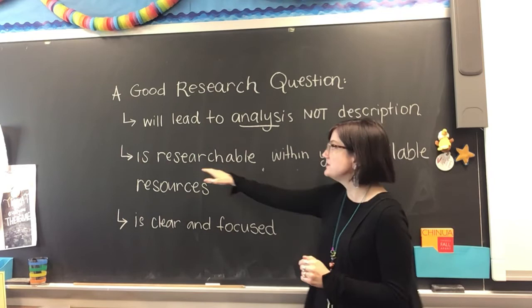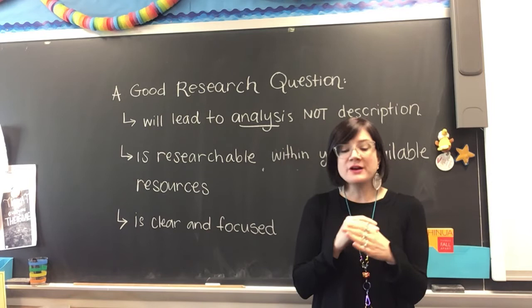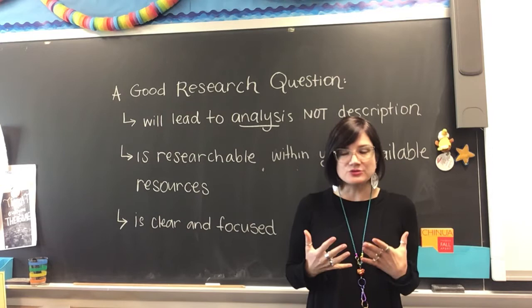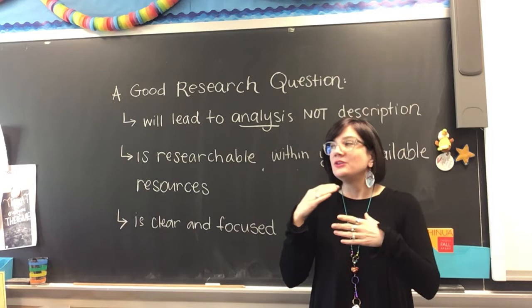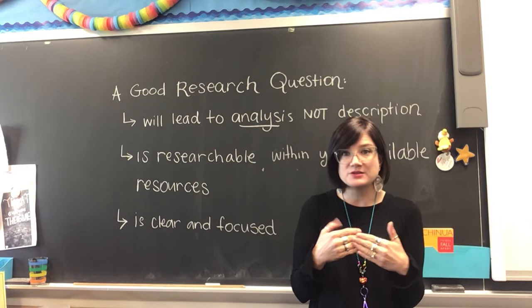The second tip is that you need to make sure your research question is researchable — and researchable within the bounds of what you have available to you. For example, you have a huge library of resources available to you through the internet, through databases like JSTOR, through our university libraries. But let's say you want to do research on sea turtles. We don't live near the ocean, so you're not going to be able to do any first-hand research about sea turtles. Everything you're going to do is through secondary research.